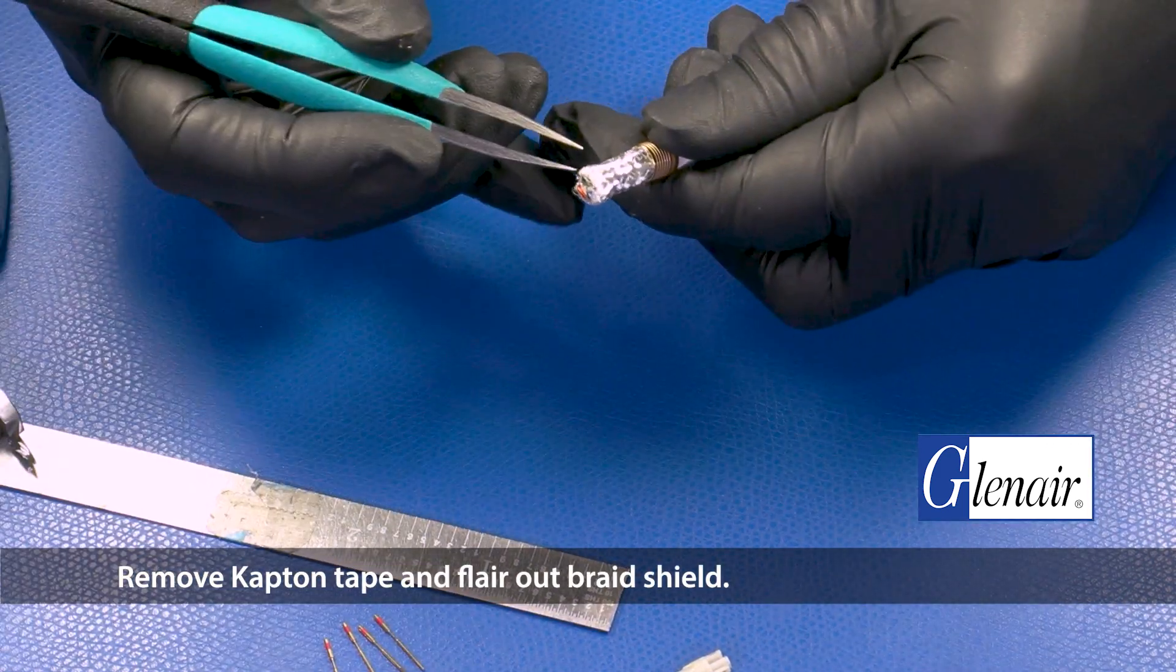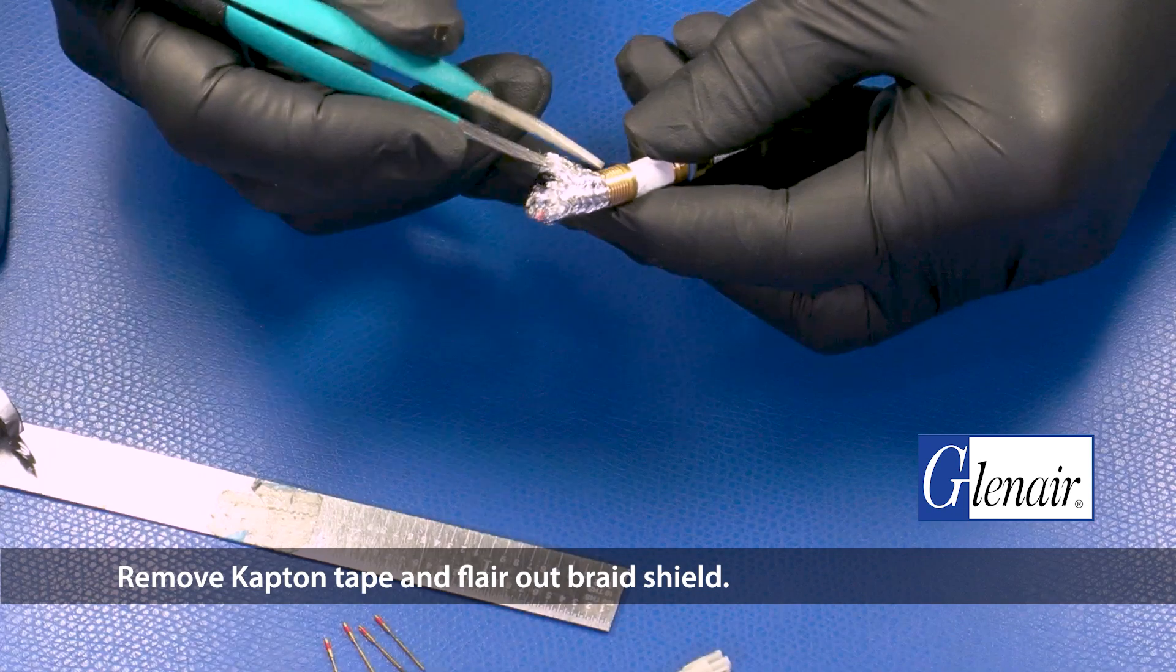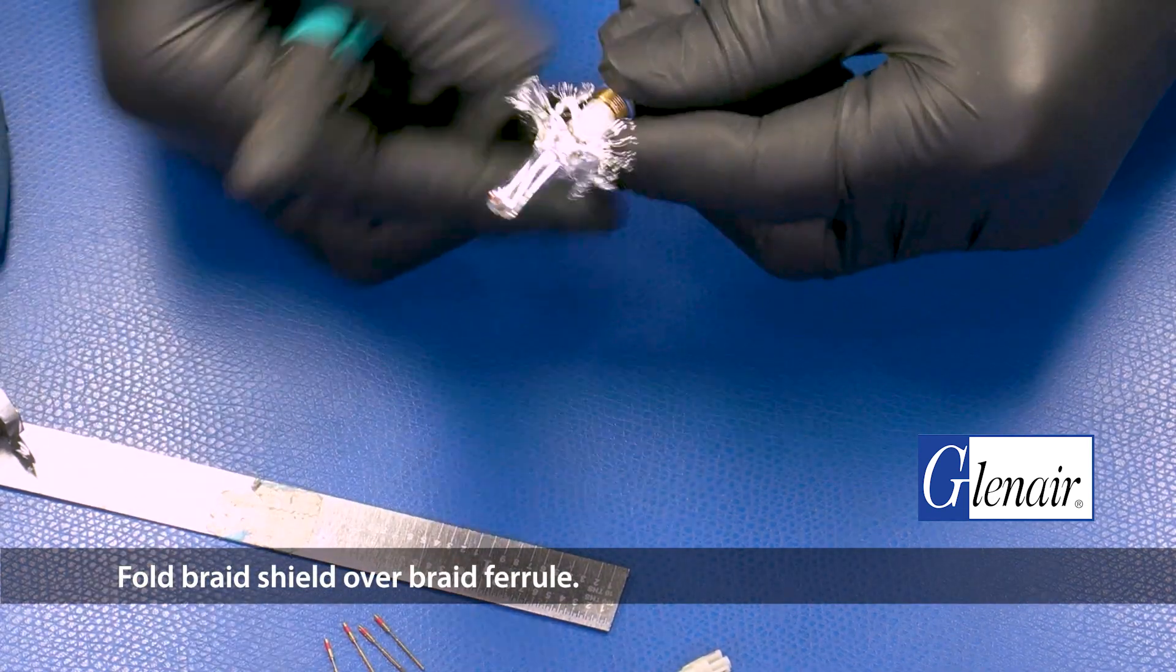Remove Kapton tape and flare out braid shield. Fold braid shield over braid ferrule.